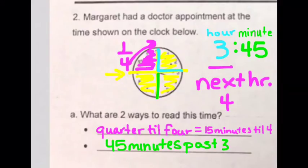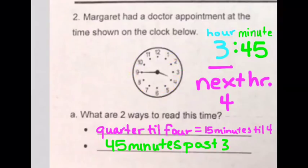You could also say it is 45 minutes past three. So those are a bunch of different ways that you could say the time that we had on the clock shown. So check your work over this one, then you'll complete question number three for you to check over tomorrow.